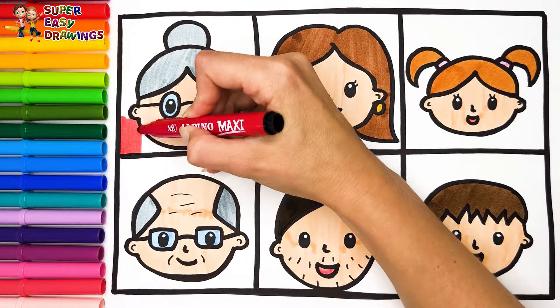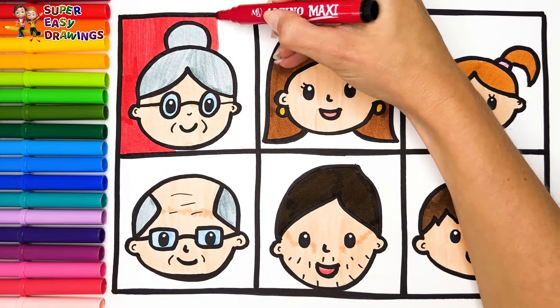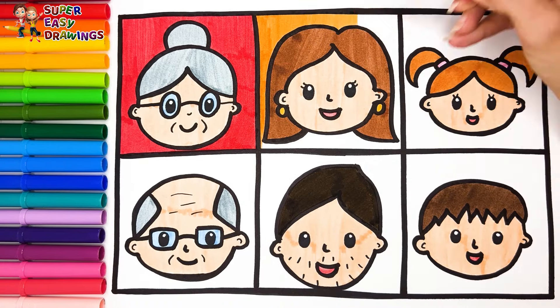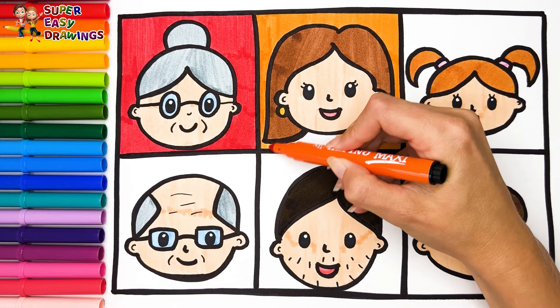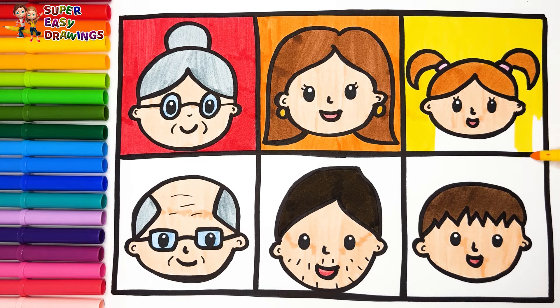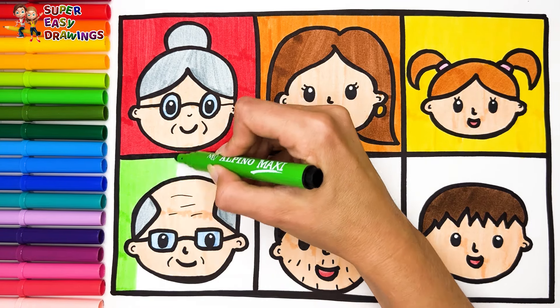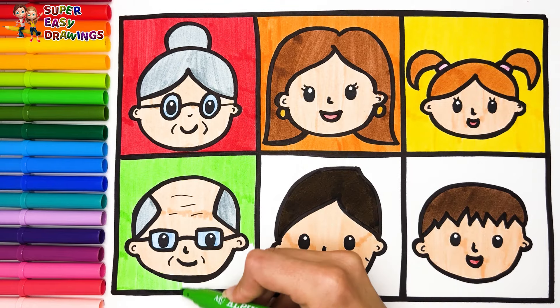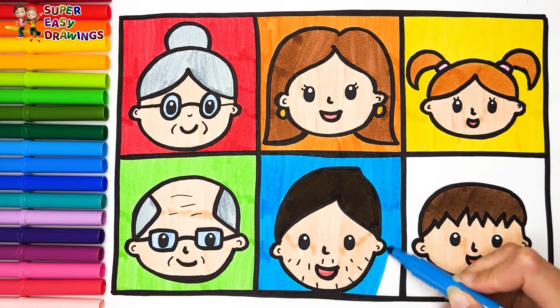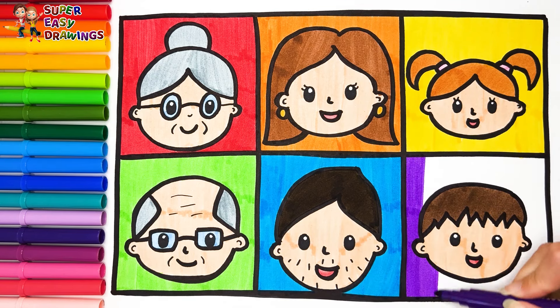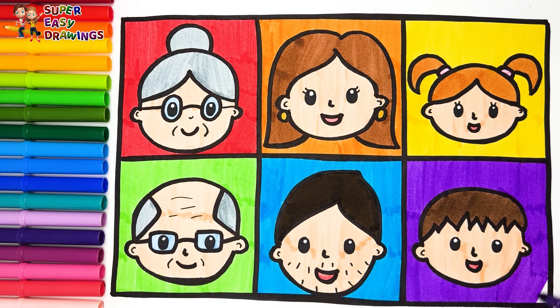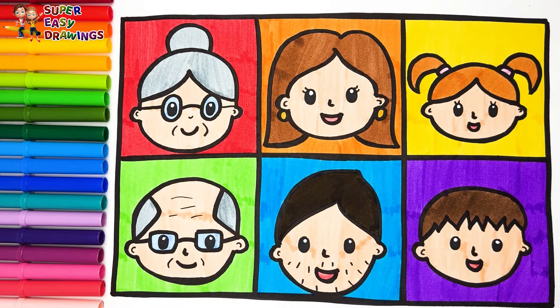Now we color all the squares with the colors of the rainbow. Red, orange, yellow, green, blue, purple. Excellent!